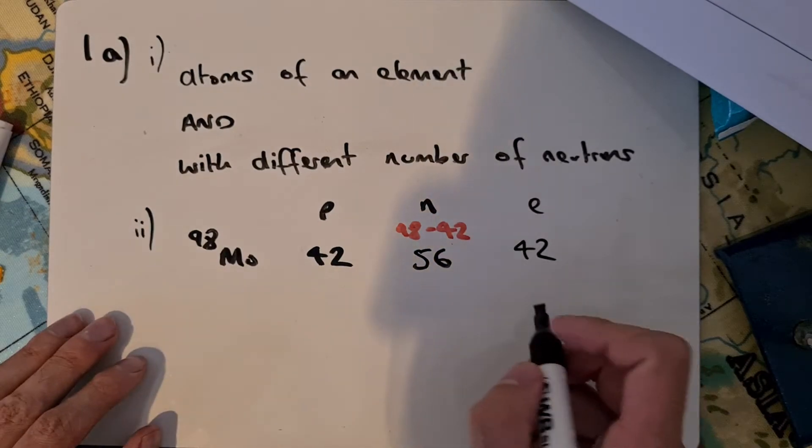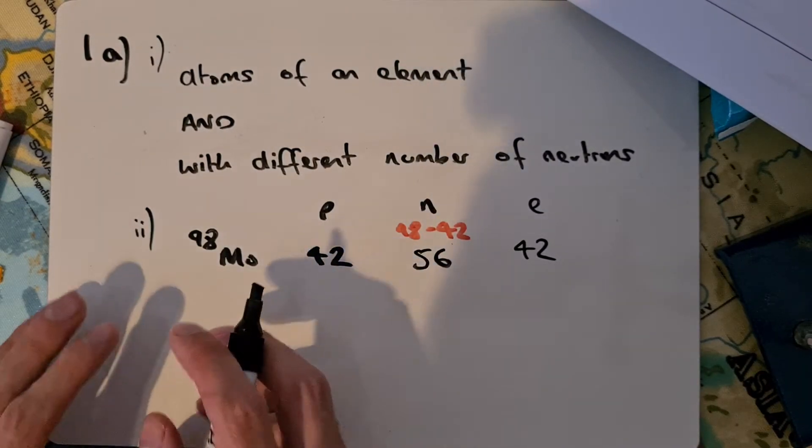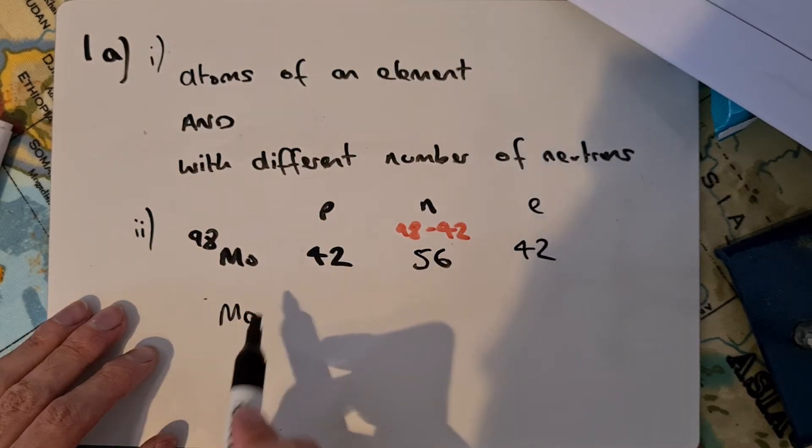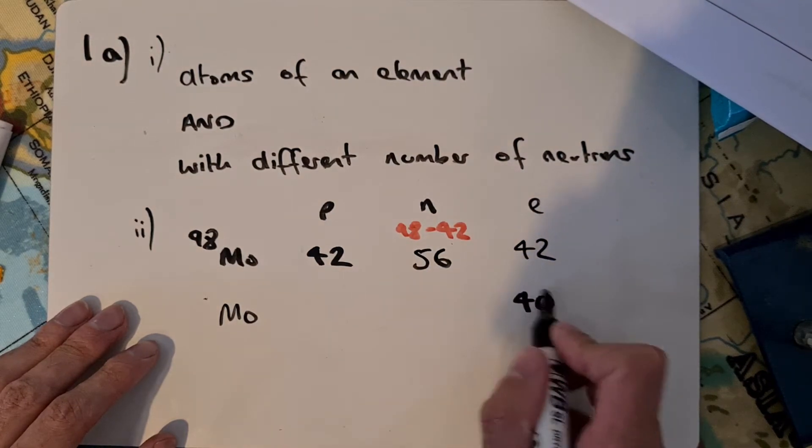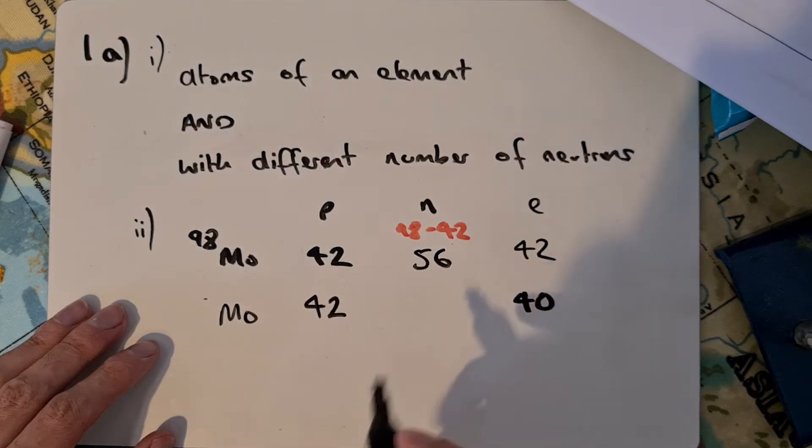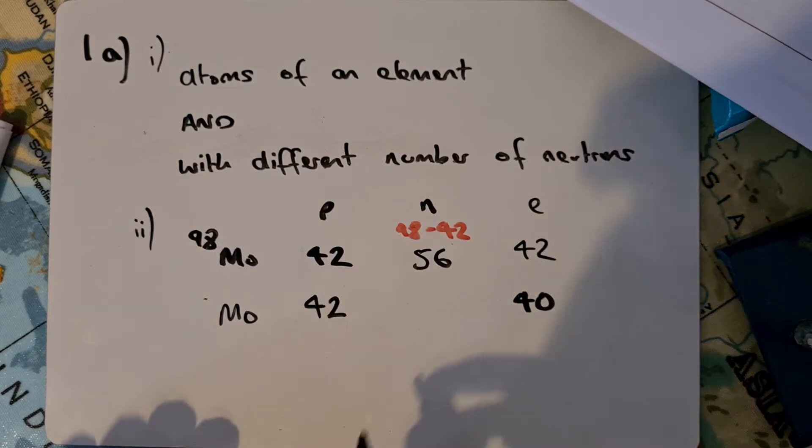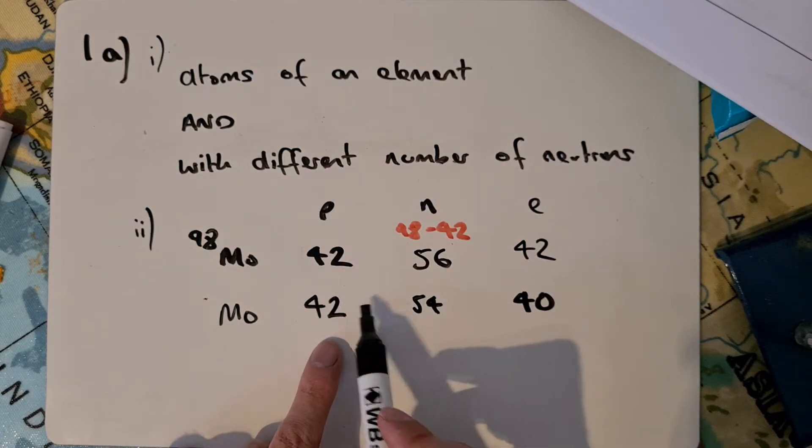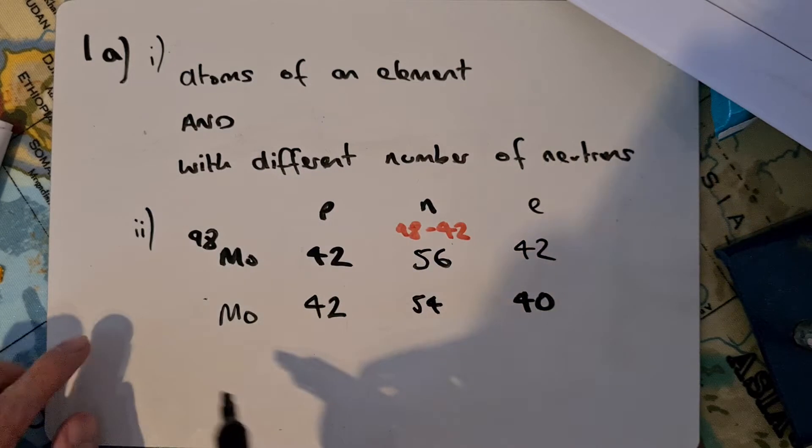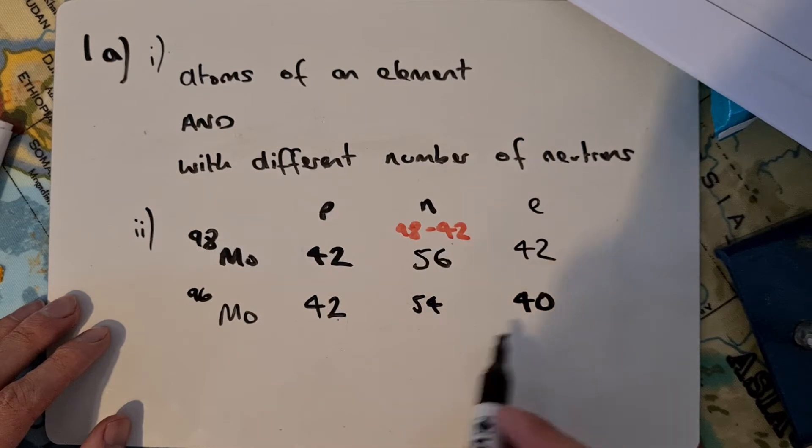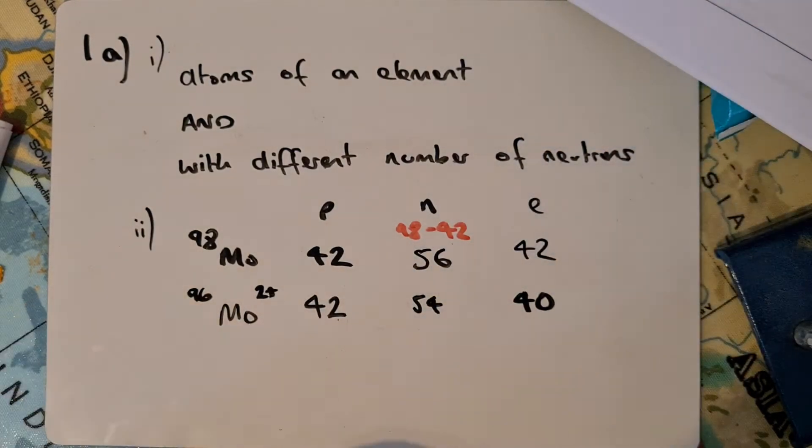For the ion of molybdenum with 40 electrons, if it's molybdenum it must have atomic number 42 - that's 42 protons. It's told us this is 54 neutrons. To work out the mass number, I'm going to do 42 plus 54, protons plus neutrons, to give 96. Now we've got two more protons than electrons, so this will be molybdenum 2 positive.